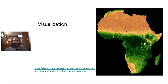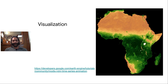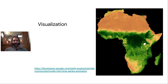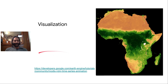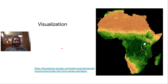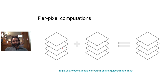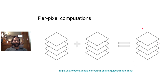First, visualization. Here's a really nice visualization of annual NDVI in Africa done by my colleague Justin Broughton, and you can find his tutorial online from the link at the bottom of the screen. You can also do per-pixel computations. This is just a multiband image, and here's another multiband image. If you add them together, Earth Engine will perform that computation pixel-wise. But there's not only addition — there are many other mathematical operators and expressions that you can use.